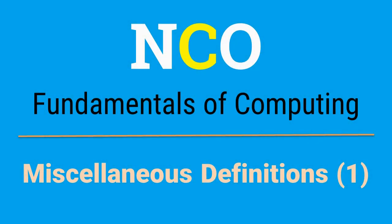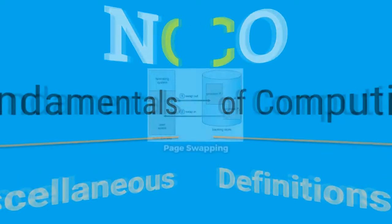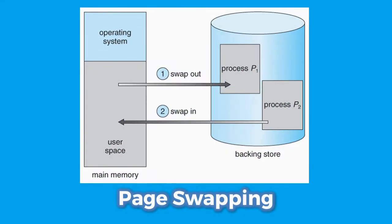Welcome everyone. In this video we are going to be looking at some miscellaneous definitions. Starting with page swapping: when RAM is divided into chunks of memory which are stored on a hard disk so that they can later be retrieved back into RAM — implementing virtual memory — such a chunk of RAM is called a page. Page swapping or disk swapping refers to a process where a page is removed from main memory and copied to the hard drive, from which it can be accessed for future use. It is necessary when the system requires more memory than it has physically available in its RAM.